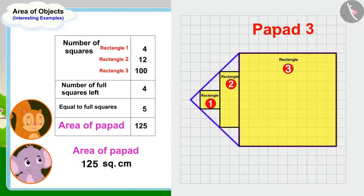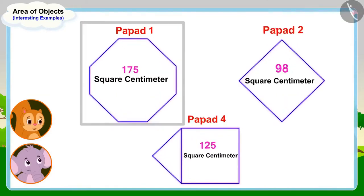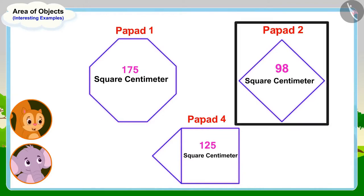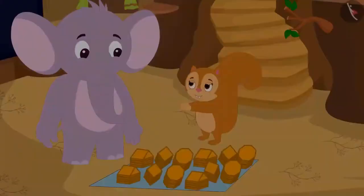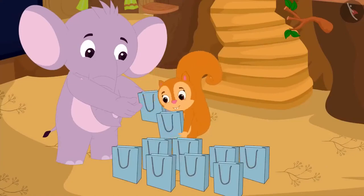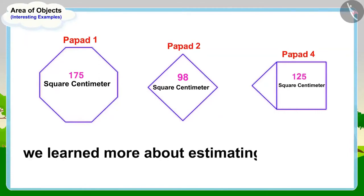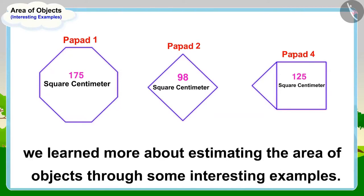Chanda and Appu also found the area of the third popper. The first popper has the largest area at 175 square centimeters, so it is the largest. The second popper has the smallest area at 98 square centimeters, so it is the smallest. Chanda thanked Appu for teaching her about area and then packed all her poppers. In this video, we learned more about estimating the area of objects through some interesting examples.